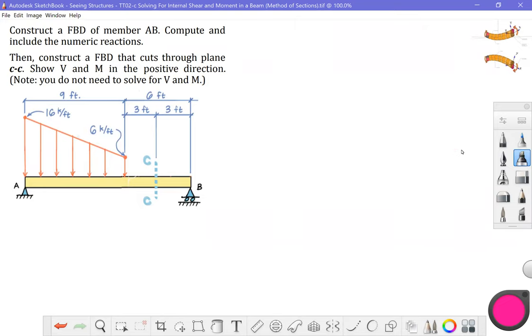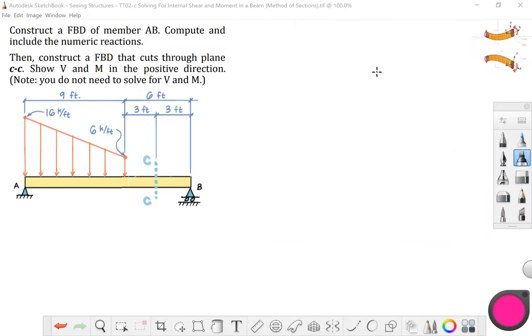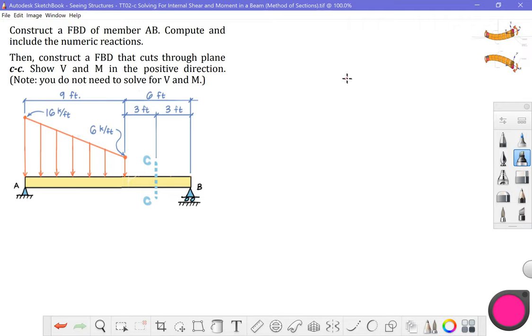Hello! In this problem we would like to construct a free body diagram of member AB, compute and include the numeric reactions. So this will be step one of our solution here. And then we're going to tackle step two. Step two asks us to construct a second free body. This one is going to cut through plane CC on this beam. Alright, let's do the first task.